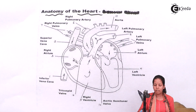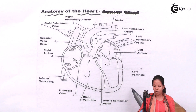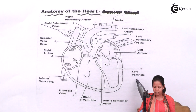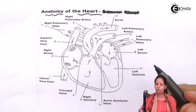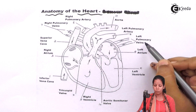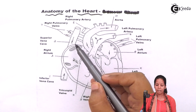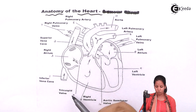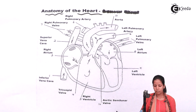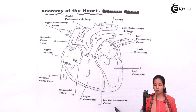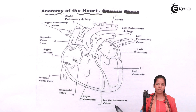This is the diagram of the structure of the heart. As you can see, there are various regions: the left ventricle, left atrium, left pulmonary veins, left pulmonary artery, and aorta. There is also the superior vena cava, right atrium, inferior vena cava, tricuspid valve, and right ventricle. In simple terms, the heart consists of four chambers — two ventricles and two atria — and the flow of blood is governed by this mechanism.